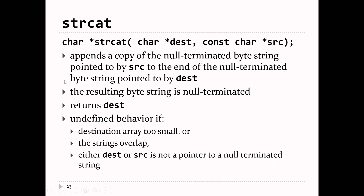At the end of the last lecture, we were talking about string functions. One of the functions we were talking about was strcat — the function that concatenates the contents of SRC onto the end of the string pointed at by DEST. What you have to remember with this function is that the destination string has to have sufficient capacity to hold itself plus whatever was in SRC.